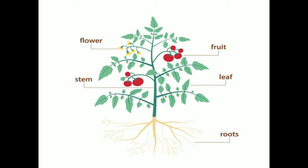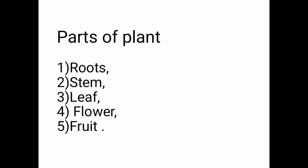First is root, second is leaf, third is fruit, fourth is stem, fifth is flower. So let's see the parts of plant.